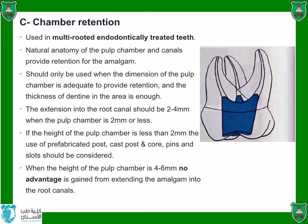When you finish root canal treatment, you fill your canals with gutta-percha. The pulp chamber may be shallow, medium, or deep. When you have a deep chamber — approximately 4 to 6 mm — there is no advantage to entering inside the root canal space. You will use this deep chamber and condense your amalgam inside it; the undercut present in the chamber will hold the amalgam in place. Chamber retention is used only when the dimension of the pulp chamber is adequate and the thickness of dentine is sufficient.